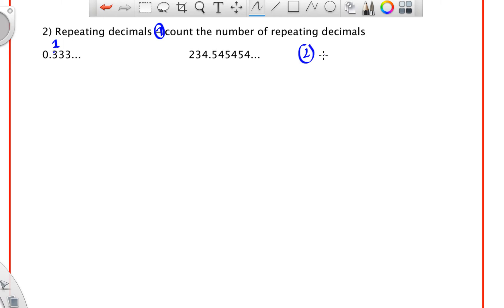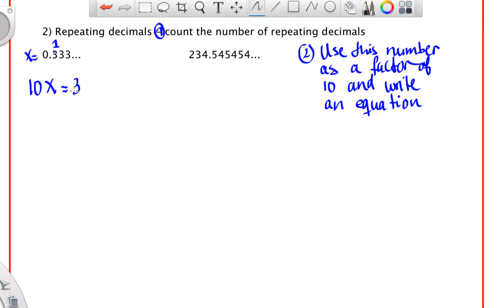So step two then is use this number as a factor of ten and write an equation. So we're going to say one times ten is 10x is equal to and then here and then here you would multiply also by ten. So initially we're going to say that this is x and then 10x would be 3.33 and then repeating.